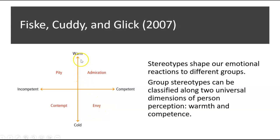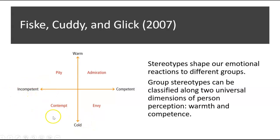If you have warm reactions and perceive a group as competent, it tends to lead to admiration. If you see people as competent but feel cold toward them, that can prompt envy. If emotions are cold and you see people as incompetent, that leads to contempt — and even disgust. If you have warm feelings toward a group but think they're incompetent, that can lead to pity.